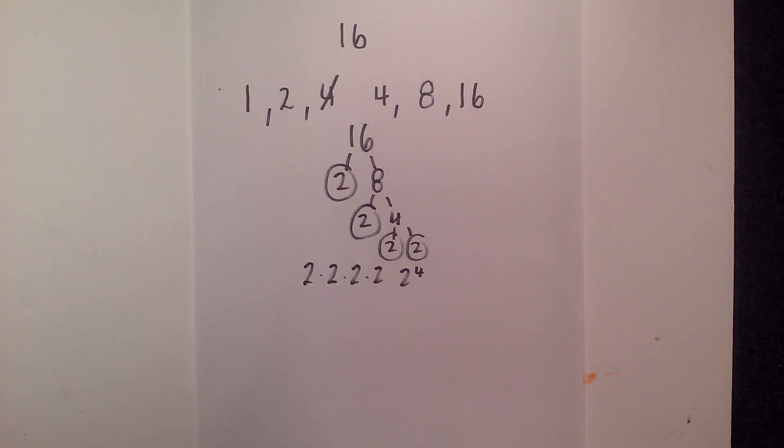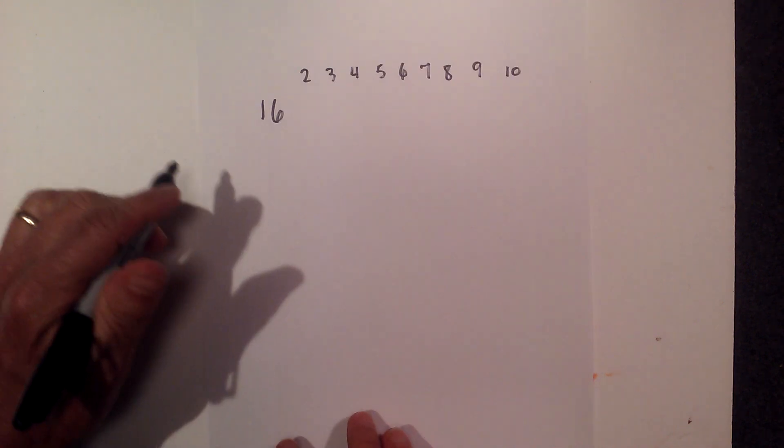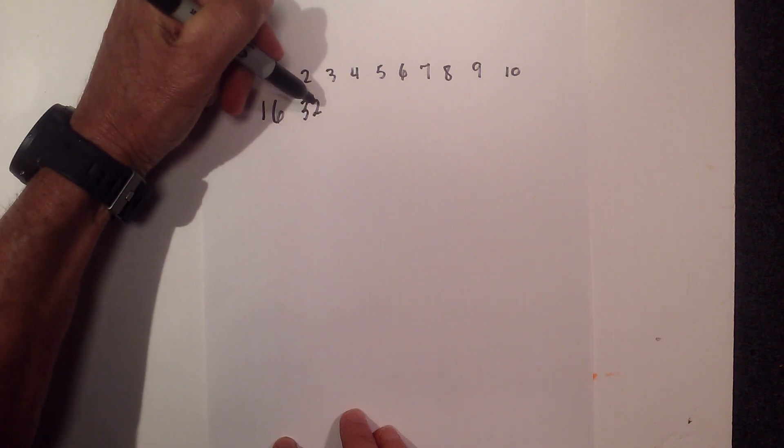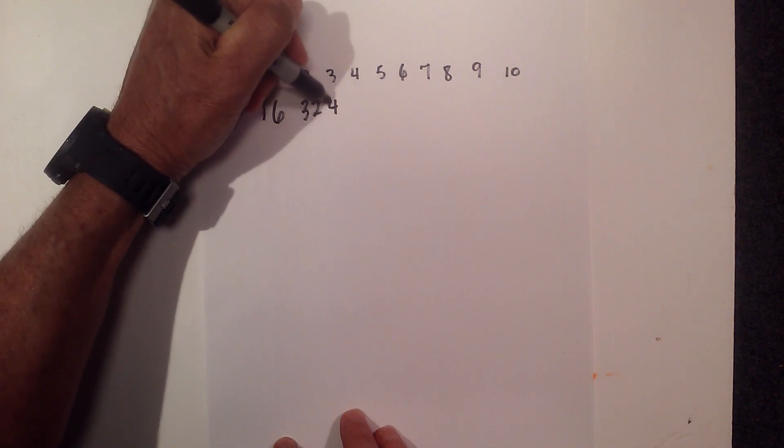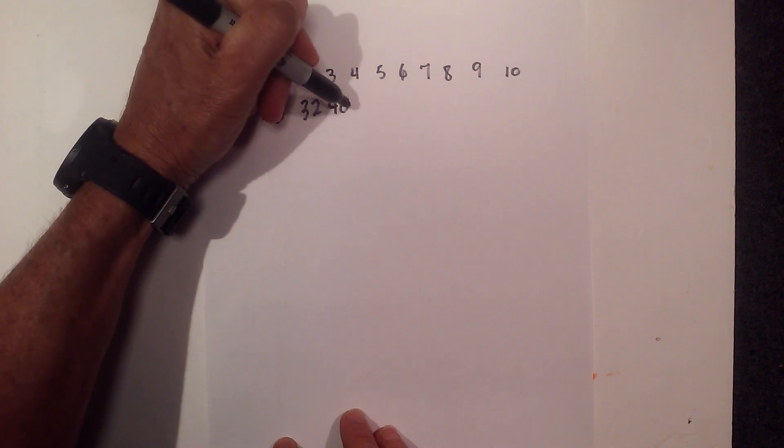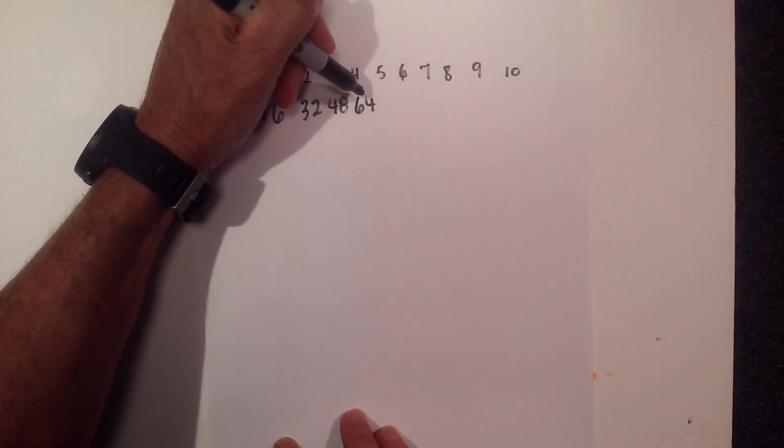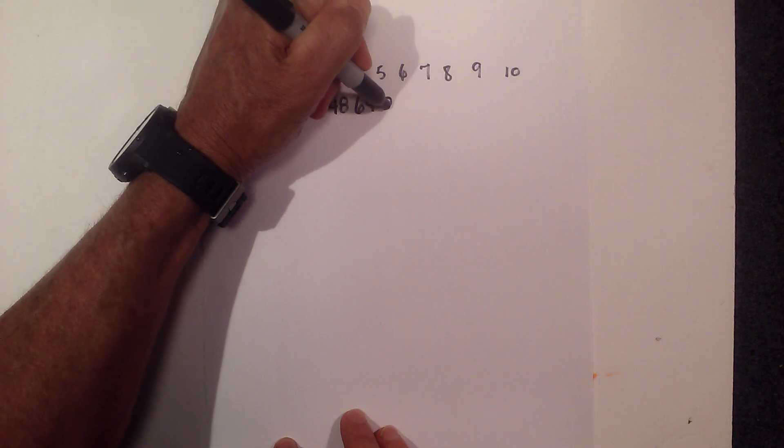Now let's find the multiples of 16. Okay so 16 times 2 is 32, then 16 times 3 is 48, and then next we have 64, then we have 80.